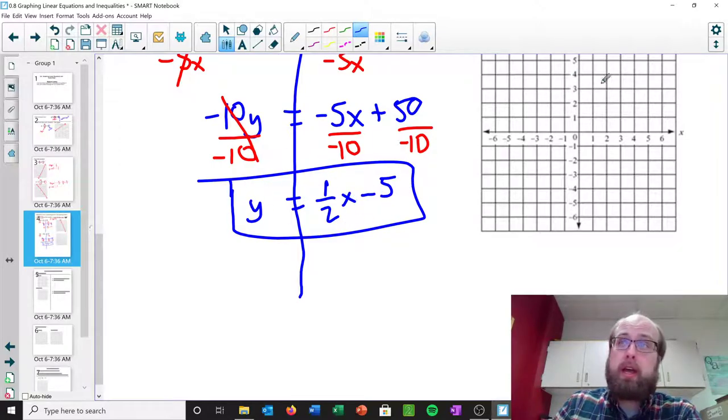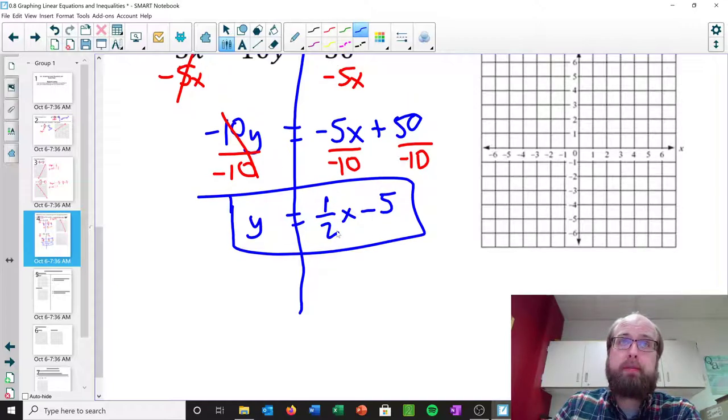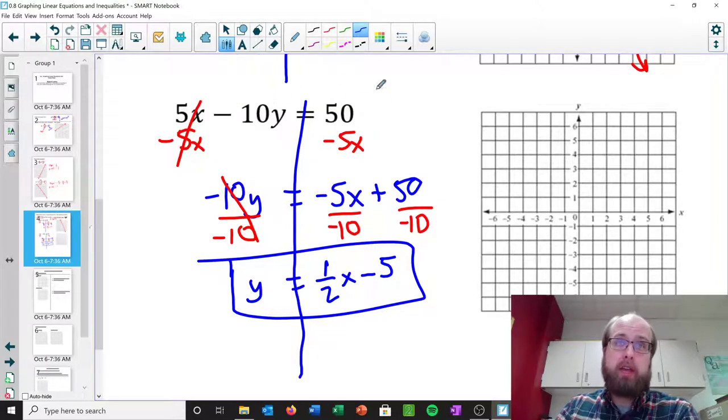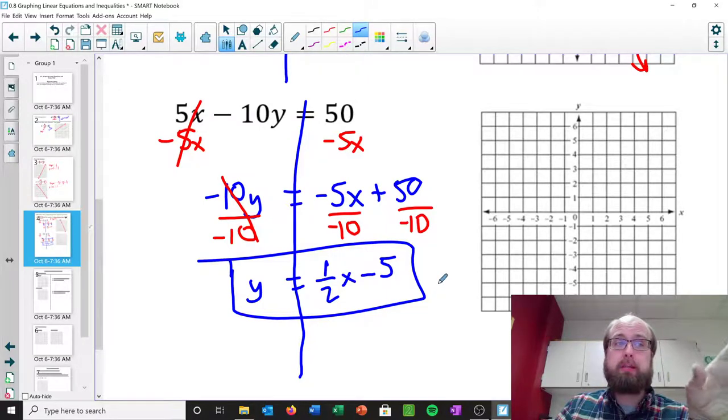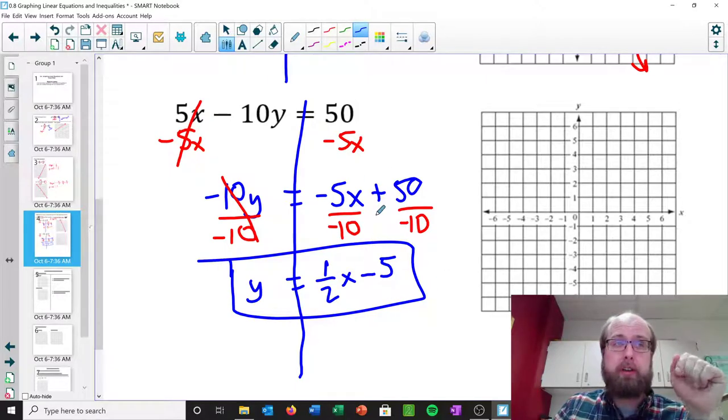You'd want to take that, go ahead and graph it. The y-intercept is negative 5. The slope is 1 half. So I'm going to have you try this out. Take an equation in slope-intercept form, or in standard form, and put it into slope-intercept form. When we come back, we're going to look at some specific cases and graphing inequalities, which is very, very similar to this.